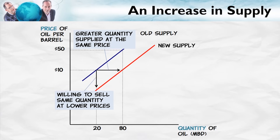We can also understand an increase in supply using the vertical reading. An increase in supply tells us that for any quantity, suppliers are now willing to sell that quantity at a lower price. They used to need at least $10 per unit to sell this many units; now they're willing to sell that same number of units at a lower price. The major factor which is going to increase supply is a reduction in costs — that's why you can understand this curve going down as costs fall.